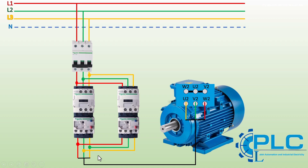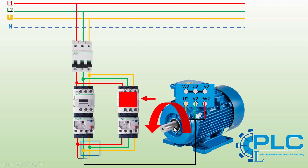In this case, I swapped phase two and phase three at the contactor's output. With this setup, when contactor one is active, the motor will run in the forward direction. When contactor two is active, the motor will run in the reverse direction, because we swapped the two phases.